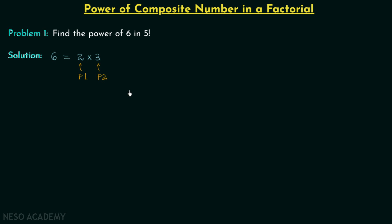In step number 2 we will forget about 6 and focus on the two prime numbers we have. We will find out the highest power of 2, the first prime number, in 5 factorial, and then find out the highest power of 3, the second prime number, in 5 factorial.